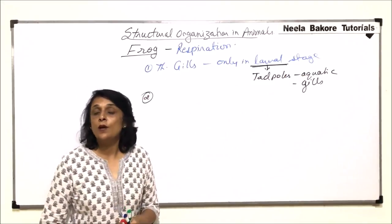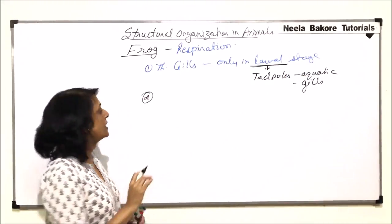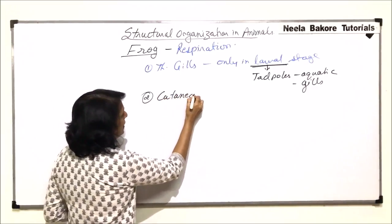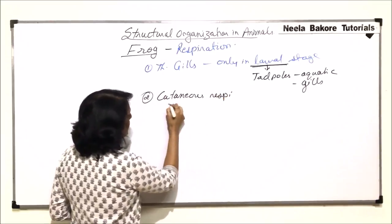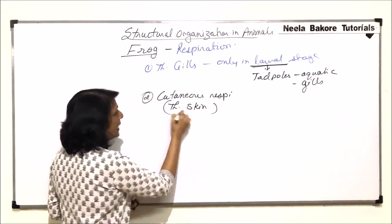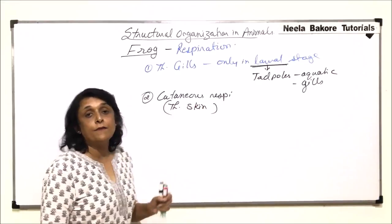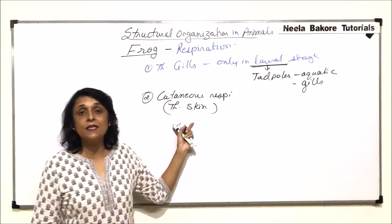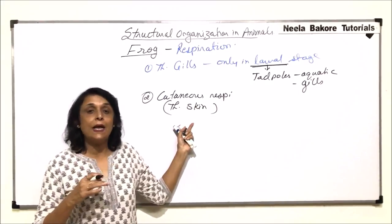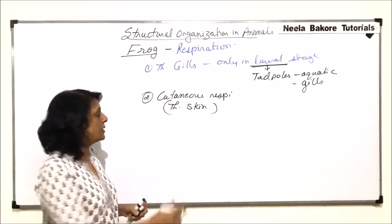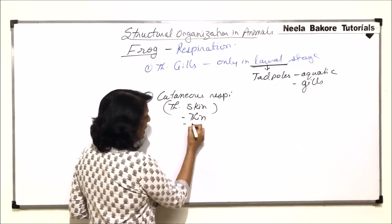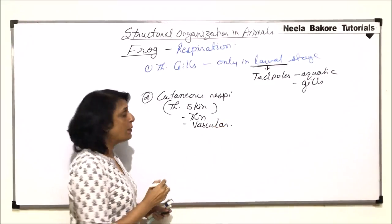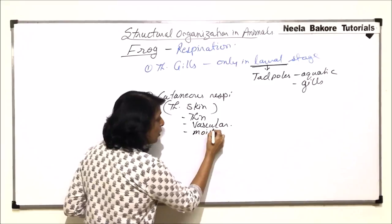In adult stages, there are three ways in which respiratory gaseous exchange takes place. One is through skin, that is known as cutaneous respiration. If a surface area is acting as a respiratory surface, then that area or membrane has to show certain characteristics: it should be thin, it should be vascular — that means supplied with blood vessels — and it should be moist.